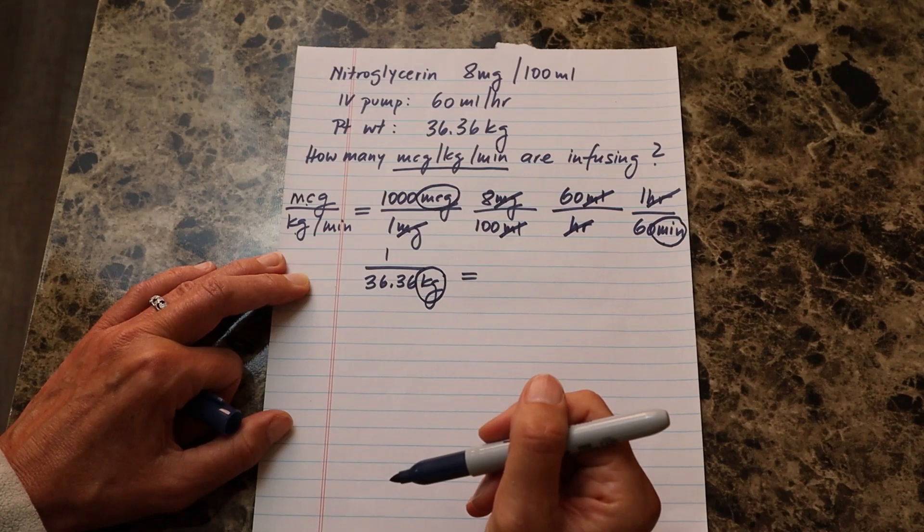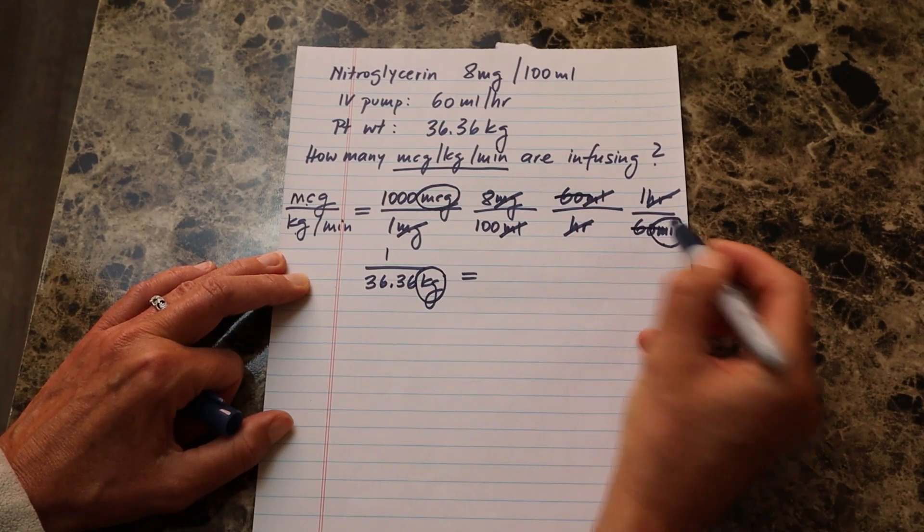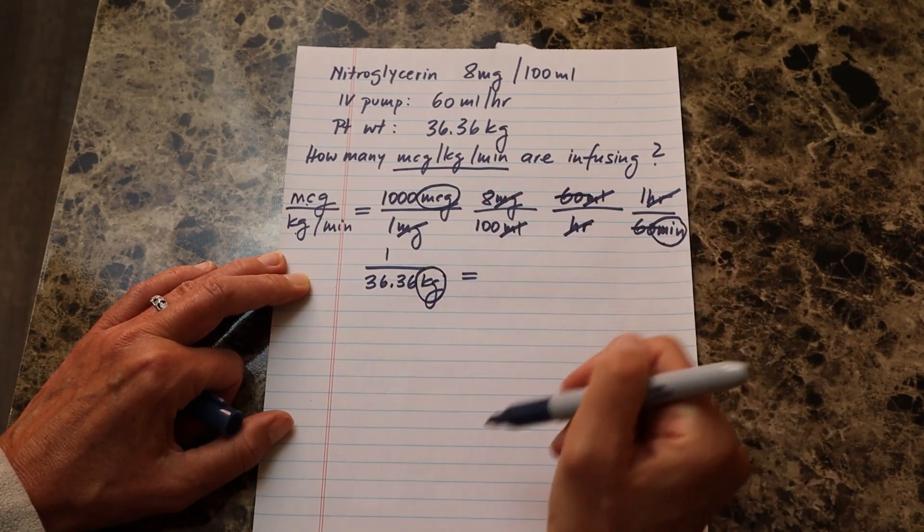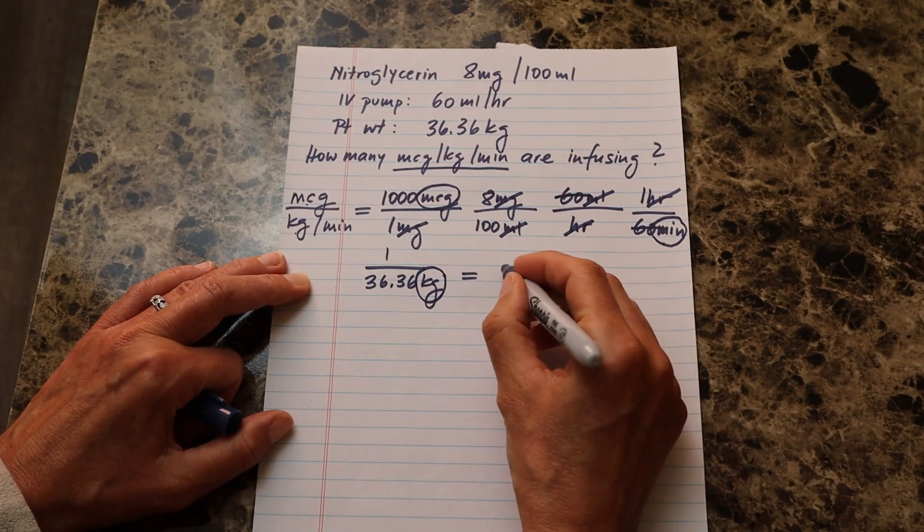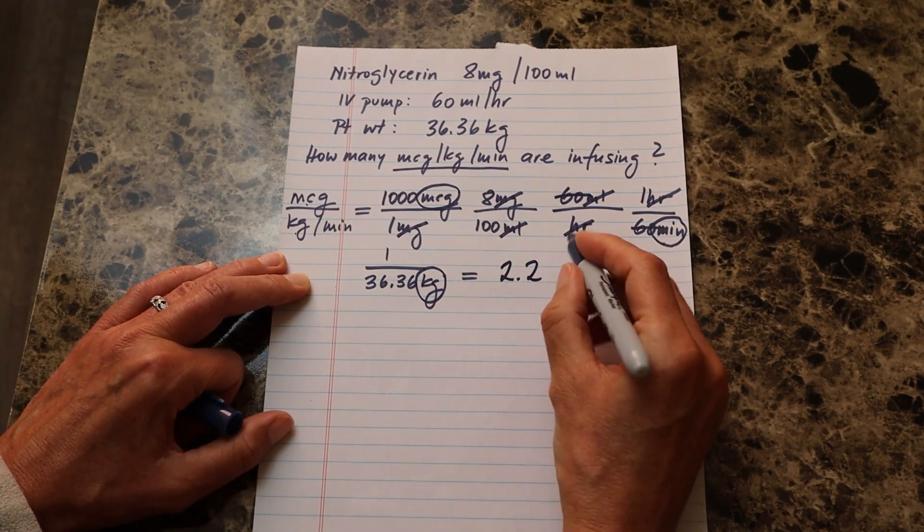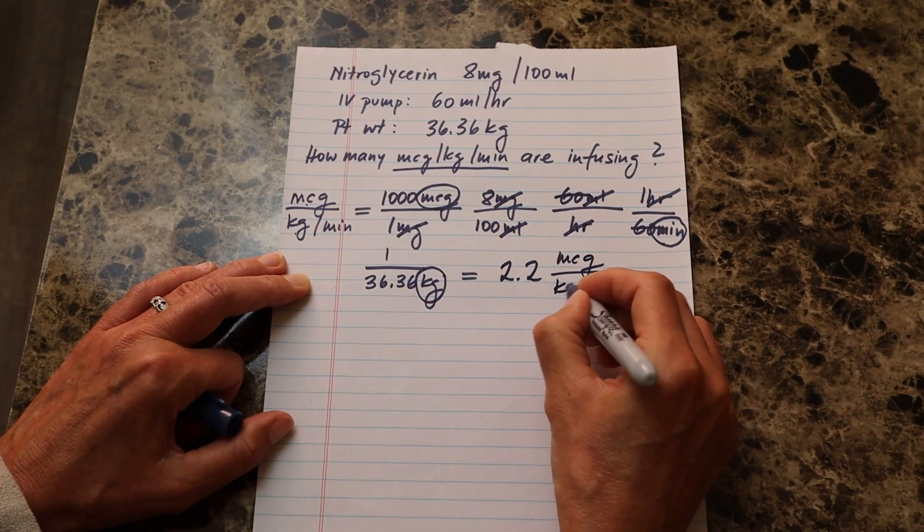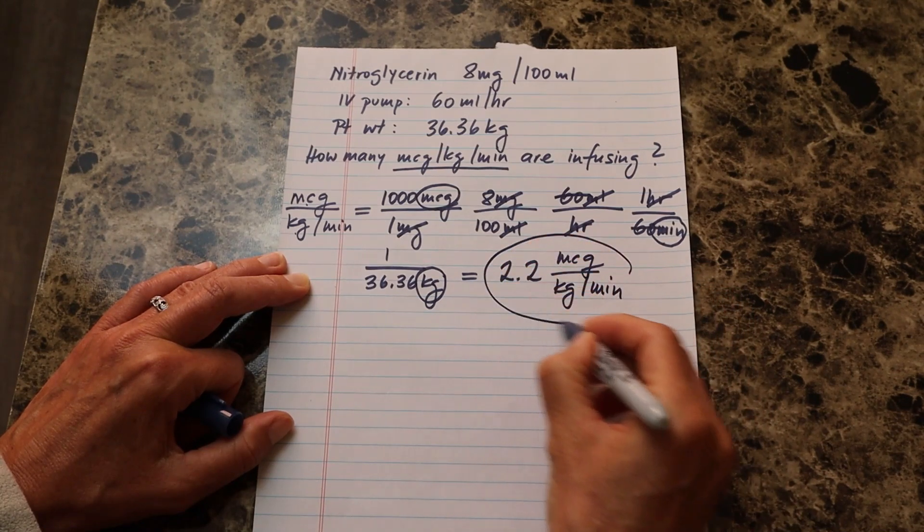If you like to cross cancel, you can do that here too. One easy way to do that is just cancel out the 60. If you're not comfortable doing that, just go ahead and plug in all the numbers on top and divide them by all the numbers on the bottom. And that comes out to 2.2 micrograms per kilo per minute. And this will be our answer.